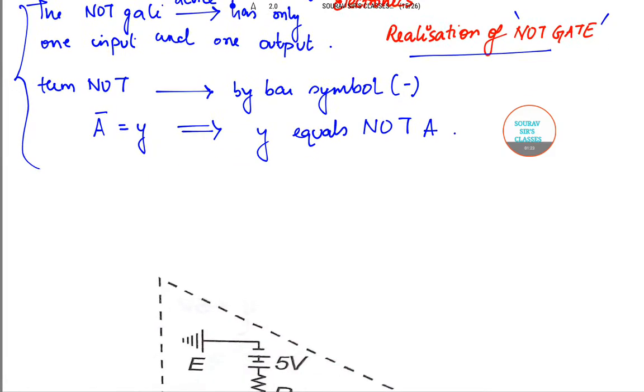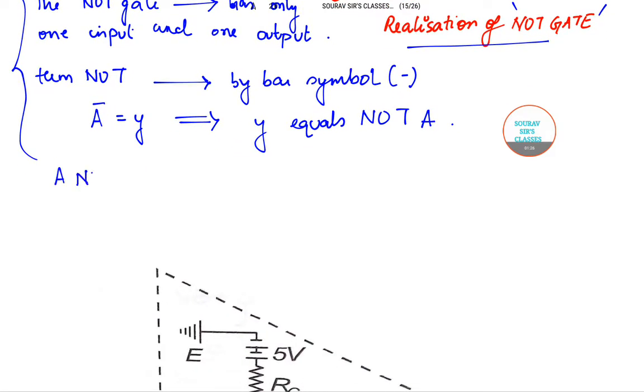Now, a NOT gate cannot be realized by using diodes. However, it can be actually realized by making use of transistors.